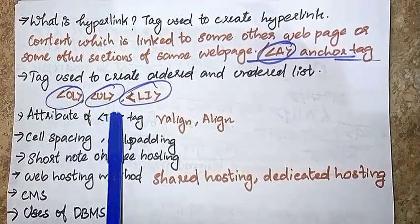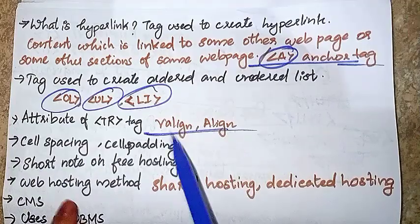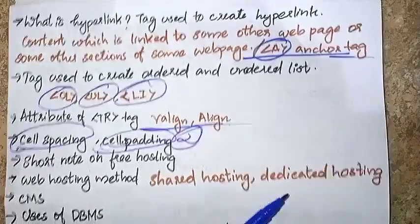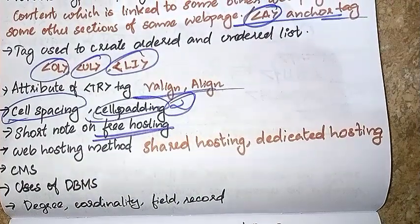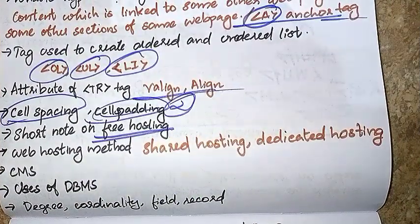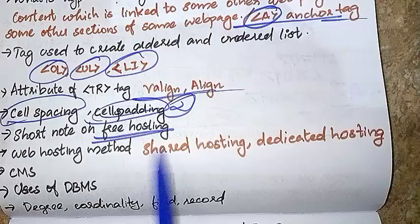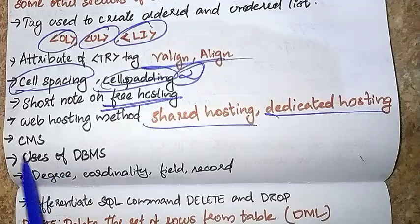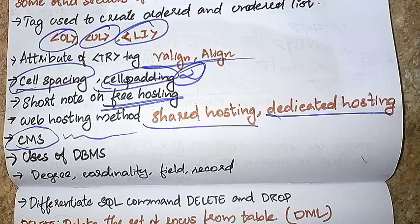The attributes of the TR tag are: ALIGN and BGCOLOR, cell padding and cell spacing. To create free hosting in the last chapter, we have web hosting methods: Shared Hosting and Dedicated Hosting. What is CMS? CMS stands for Content Management System.